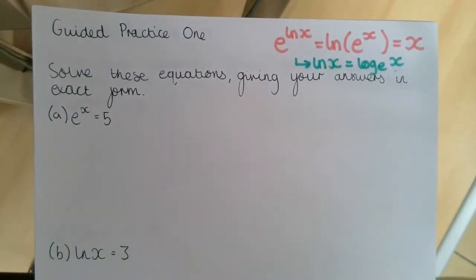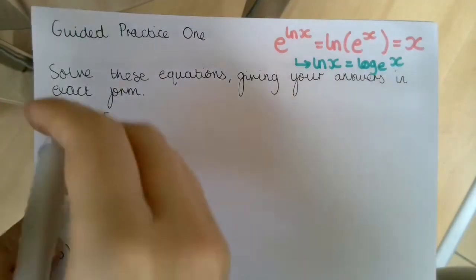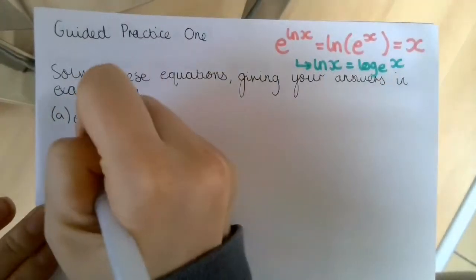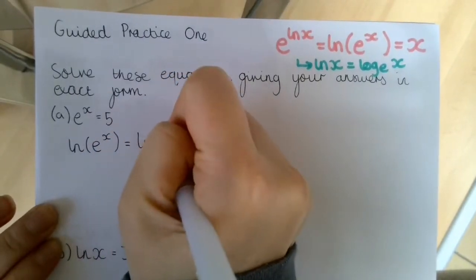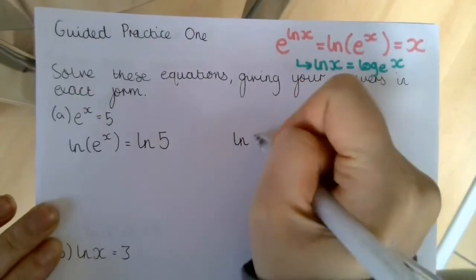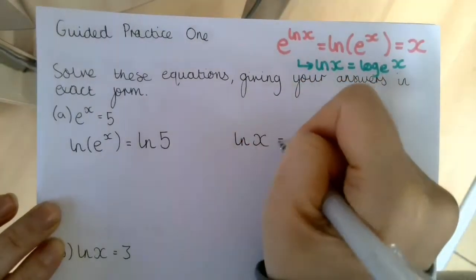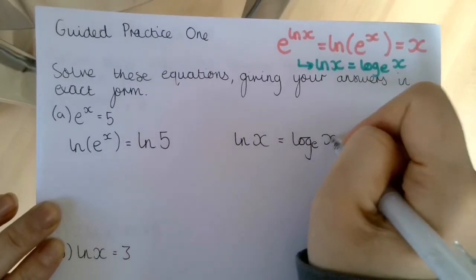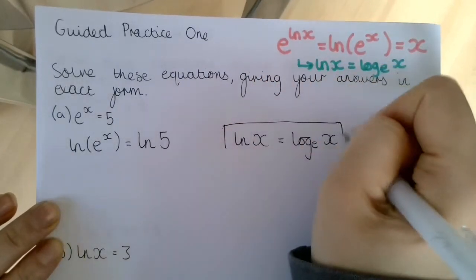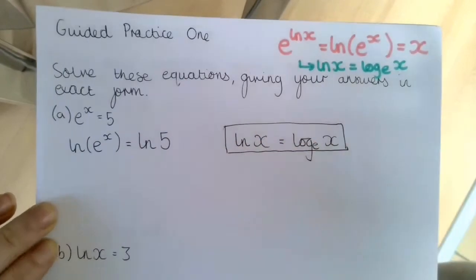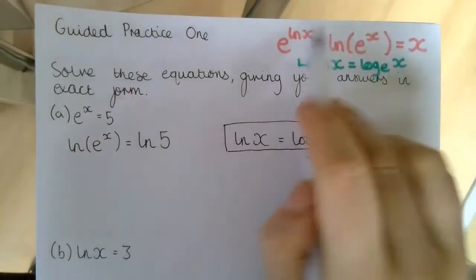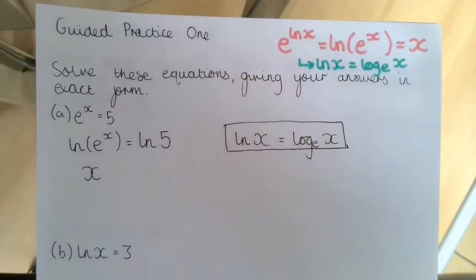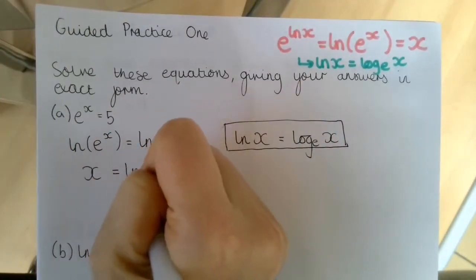The first equation is e to the power of x equals 5. We're going to take the natural logarithm of both sides: ln of e to the power of x equals ln 5. Remember that ln of e to the power of x is equal to x, because they are inverse functions. So x is equal to ln 5.